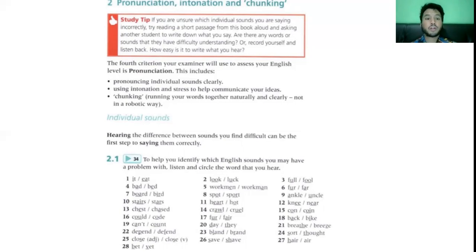The fourth criterion your examiner will use to assess your English level is pronunciation. This includes pronouncing individual sounds clearly, so you have to pronounce individual words and sounds in English correctly. Using intonation and stress to help communicate your ideas. Chunking, that's grouping your words and giving gaps between groups of words so that it would be easier for you to convey your point to your speaking partner.